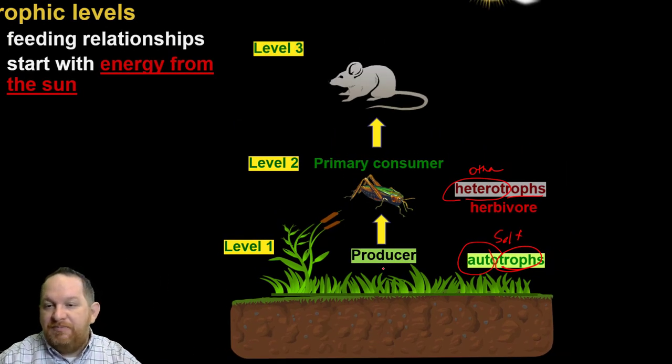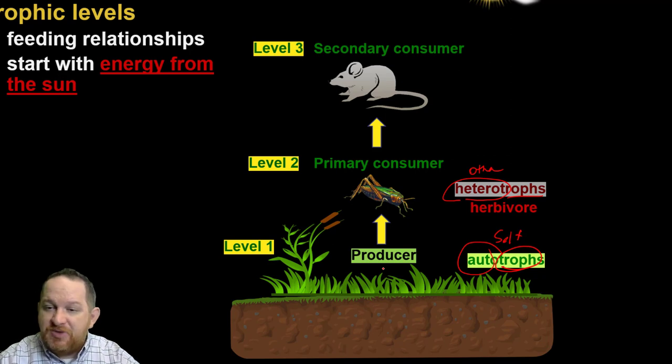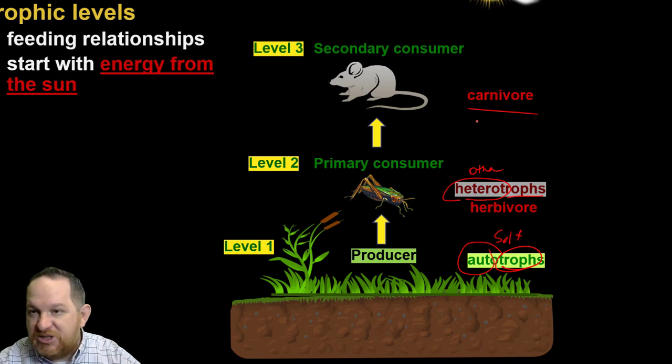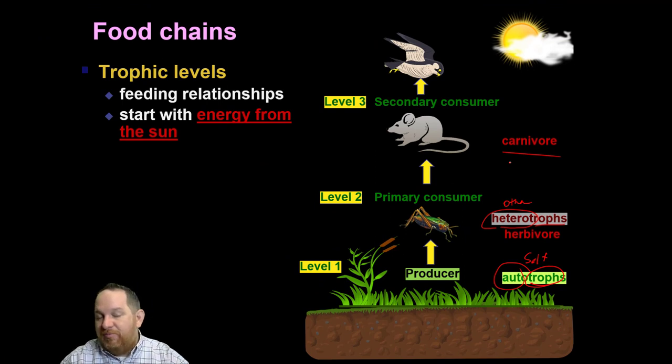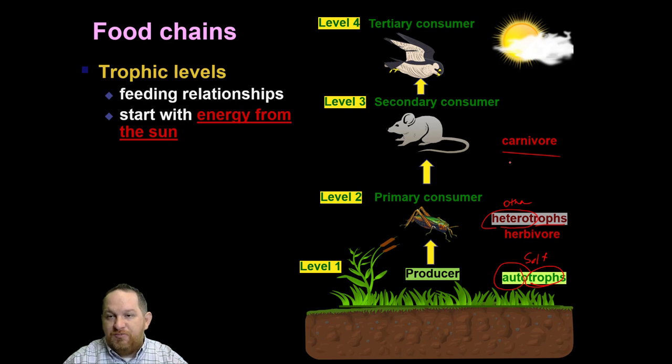You might also hear the word herbivore because these primary consumers often only eat plants. Then we go to our level three, the secondary consumer, like a field mouse. Mouse eats the grasshopper, which eats the grass. Because this secondary consumer is eating another heterotroph, we would call them a carnivore. They're eating more than just plants. Then finally, we have a tertiary consumer eating the secondary. All started with energy from the sun that came down.